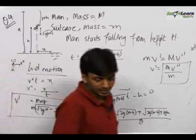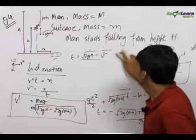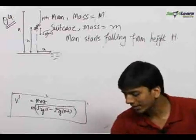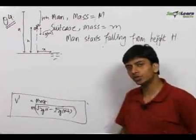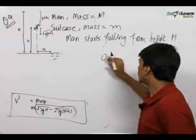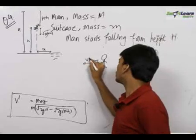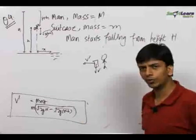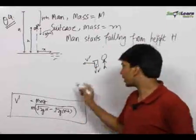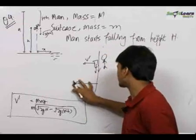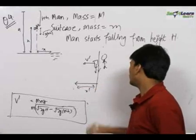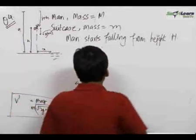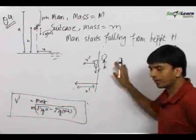Now the second part of the question is: where does the bag land? There are two ways of solving this. One way is quite easy — I will tell you the difficult way first, which most people will use. They know the horizontal velocity v dash of the bag and the vertical velocity of the bag, find the time taken to fall, then multiply by v dash to get the distance where it lands. But this method is very lengthy and unnecessarily complex.